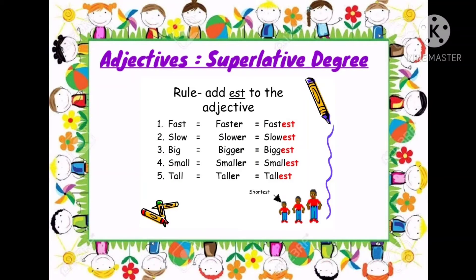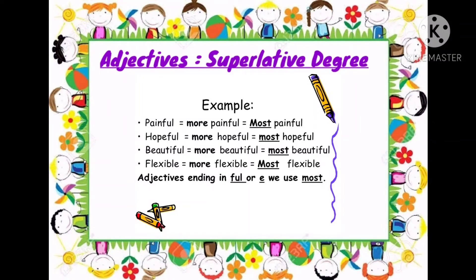So the three degrees are: first positive degree, second comparative, and third superlative. For adjectives ending in -FUL or -E, we must use 'most' to change them into superlative form — in comparative degree we used 'more', and in superlative degree we use 'most'. For example: painful becomes more painful in comparative and most painful in superlative. Hopeful becomes more hopeful and most hopeful. Beautiful becomes more beautiful and most beautiful. Flexible becomes more flexible and most flexible.